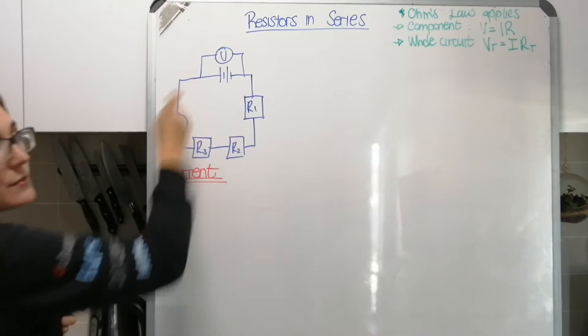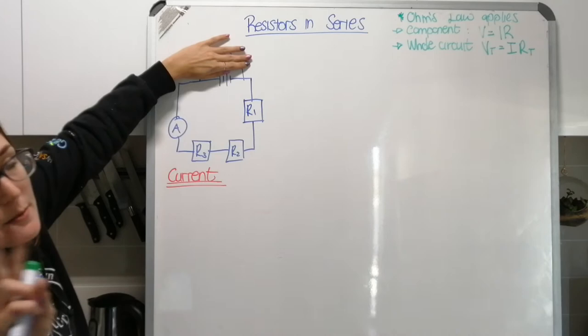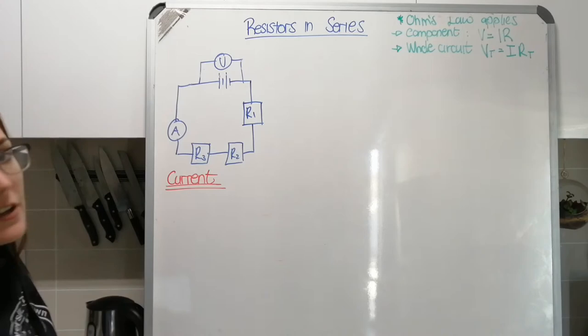The voltmeters that measure potential difference are connected in parallel, but they have such a high resistance that hardly any current goes through them. So we don't include our voltmeters as resistors in parallel — our resistors are all in series.